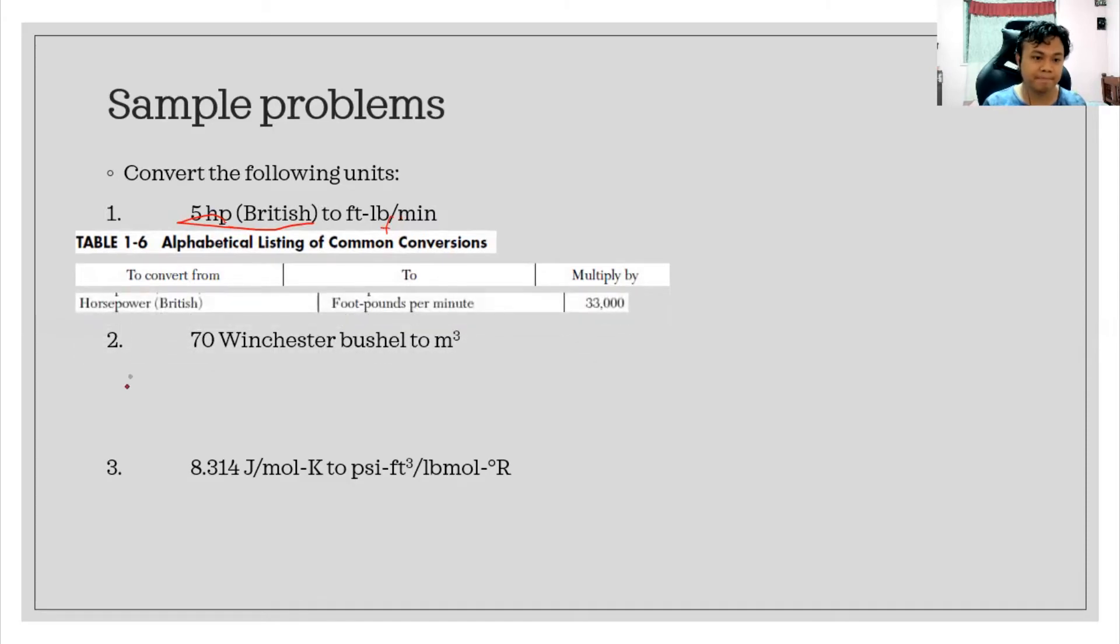We have to convert the following units: 5 horsepower British to foot pound force per minute. To convert horsepower British to foot pounds per minute, you have to multiply the given value by the value that is given in the Perry's. You have to multiply 5 HP by 33,000. So 5 times 33,000, you will get 165,000 foot pounds per minute.